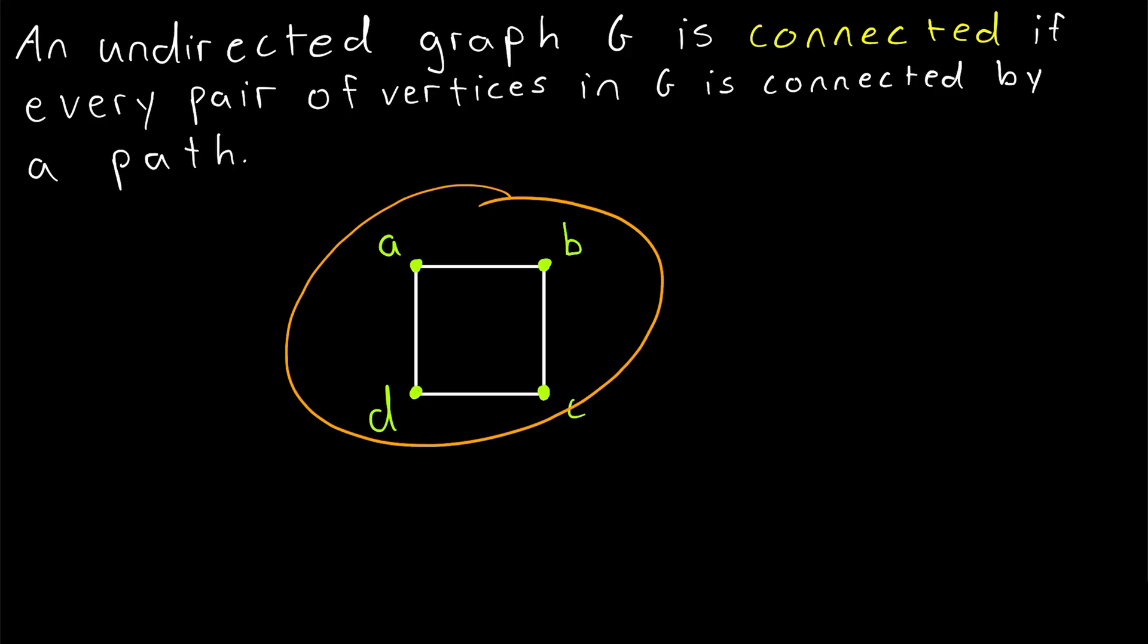So here's an example of a connected undirected graph. It is a connected graph because there's a path connecting every pair of vertices. And since this is an undirected graph, if there's a path going from A to C, for example, we can also travel from C to A by just going the opposite direction along the same path.